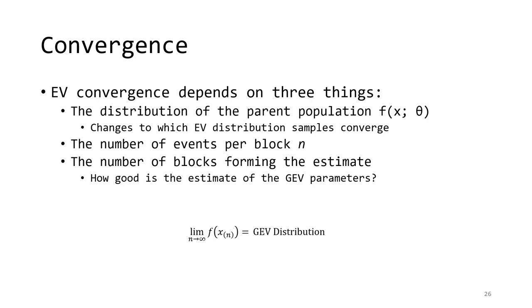However, the most important factor in convergence is that second point — how many events per year our maximum is drawn from. As this value gets larger and larger, the distribution of the values of our maxima looks more and more like the GEV distribution.